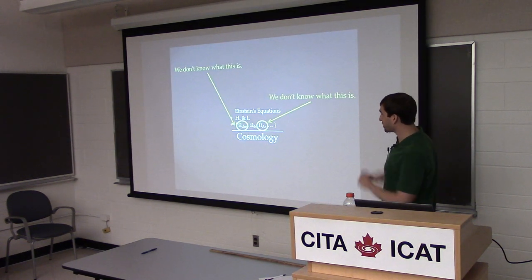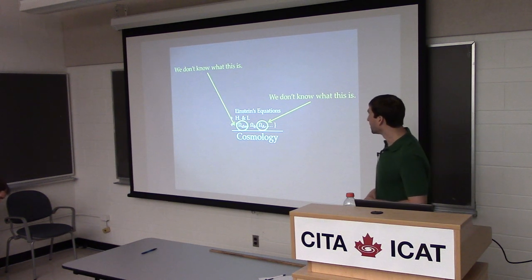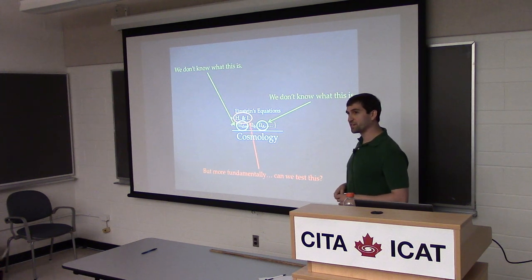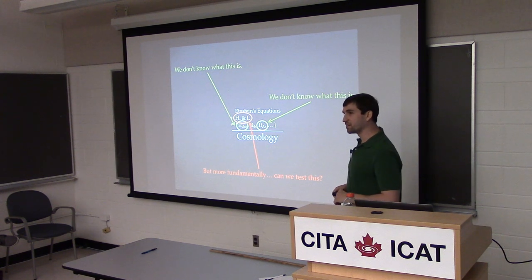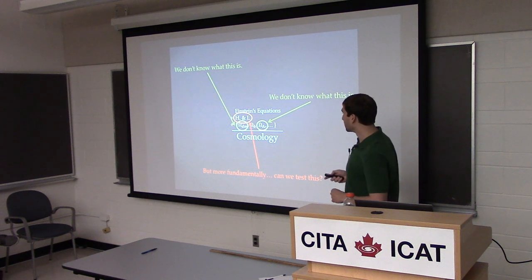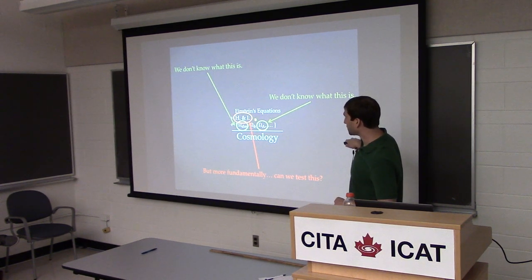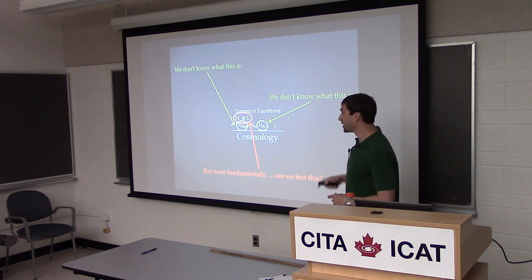A lot of cosmology focuses on what is dark matter and what is dark energy — these two things that comprise our universe and how they work. What I'm going to be focusing on today is rather a particular assumption that goes into a lot of our models. Instead of asking what dark matter or dark energy is, we observe that the universe is homogeneous and isotropic, but then we bake this into our cosmological models. For example, in perturbation theory we perturb around a homogeneous and isotropic background.